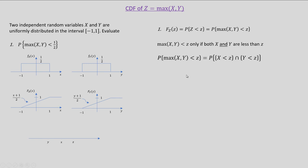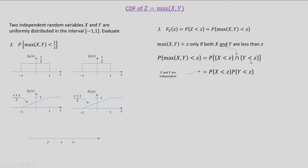Hence, the probability that max of x comma y is less than z is the same as the probability that both x and y are less than z, or equivalently, the probability that x is less than z AND y is less than z. Note that the AND operation is the same as the intersection operation. As x and y are given to be independent, the probability of A intersection B can be written as probability of A times probability of B, where A is given by x less than z and B is given by y less than z.